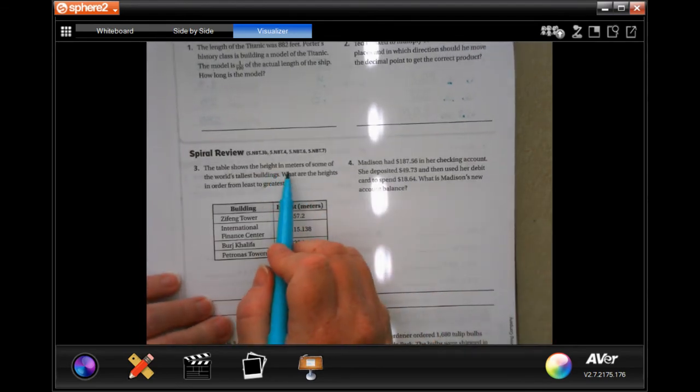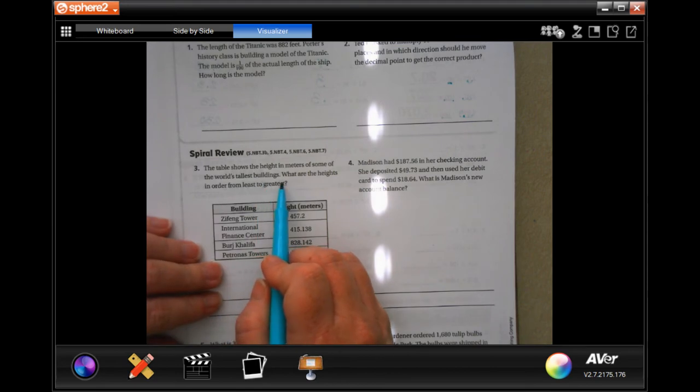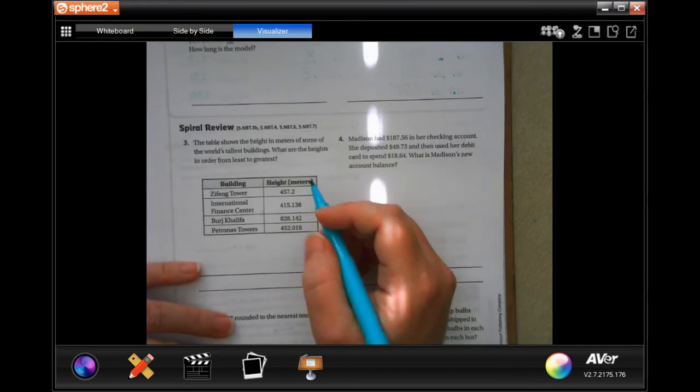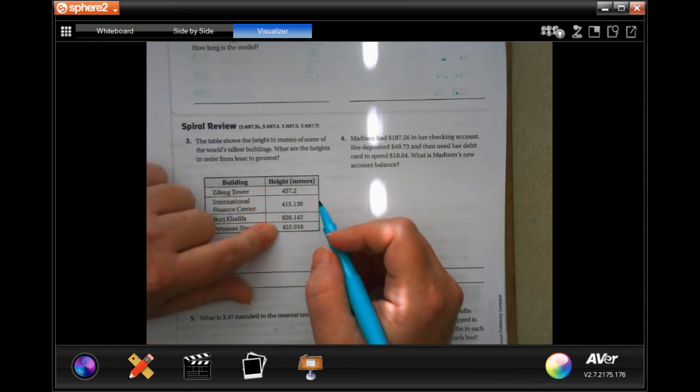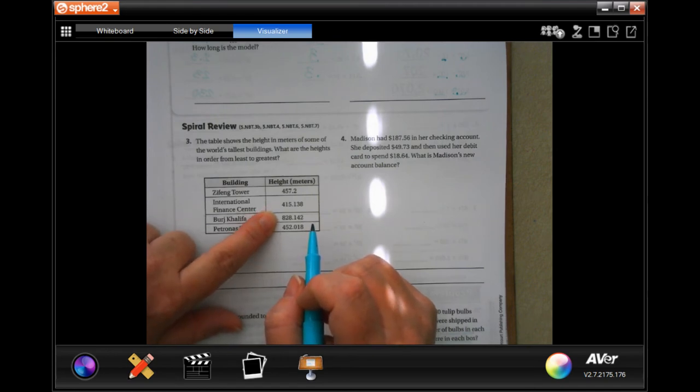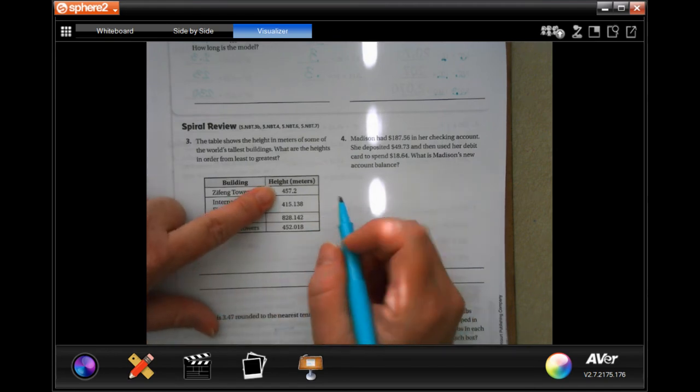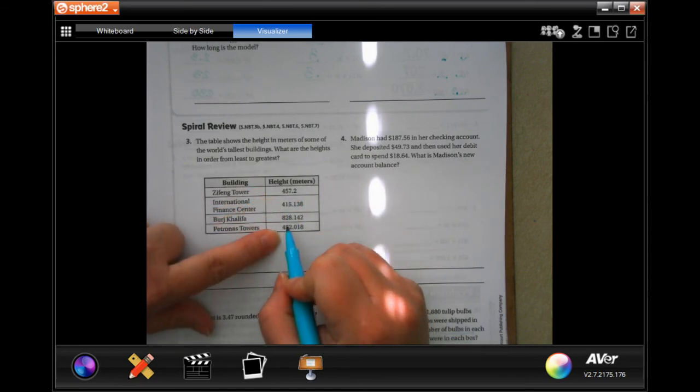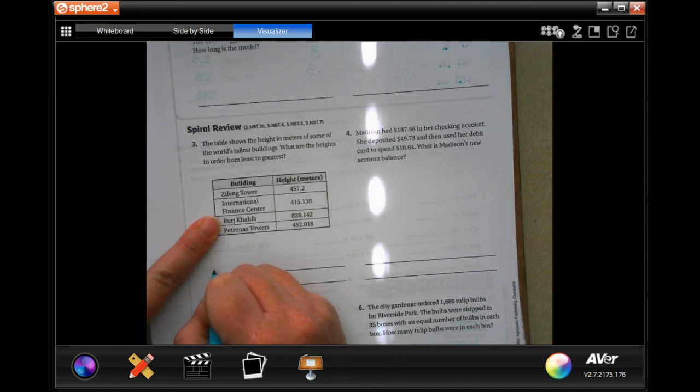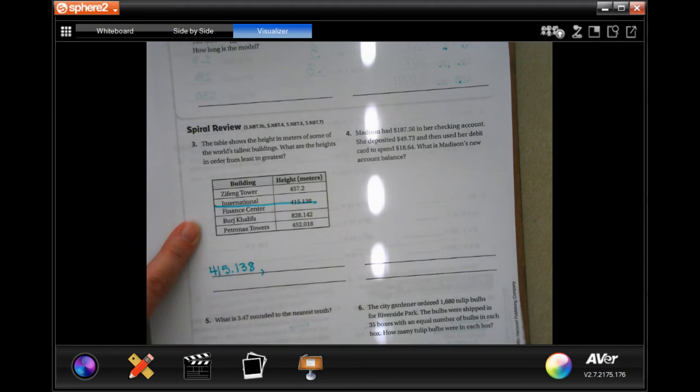The table shows the height in meters of some of the world's tallest buildings. What are the heights in order from least to greatest? So the smallest first. Well, this one, this one, and this one all start with four. That's an eight. That one's going to be the very last. So we have four, five, four, one, and four, five. That means that this one is going to be first. So 415.138. That's our first one.